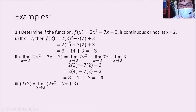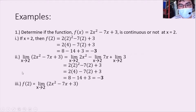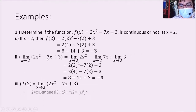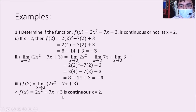Since conditions 1 and 2 are met, condition 3 is also met, because the limit and the function value are equal when evaluated. Therefore, we can conclude that f(x) is continuous at x = 2.